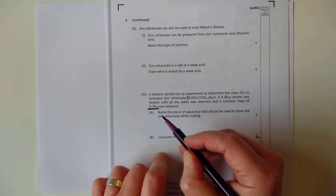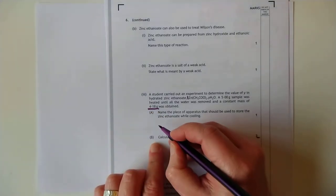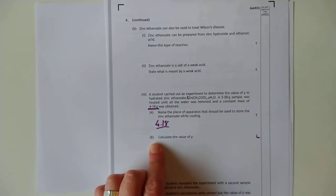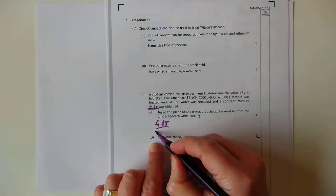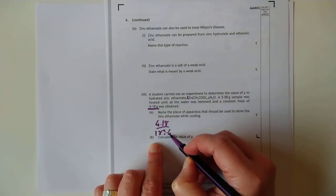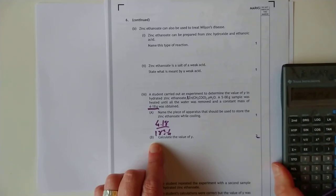So the actual mass of the zinc ethanoate was that. So we're talking about 4.18 over the GFM, which is 183.4.